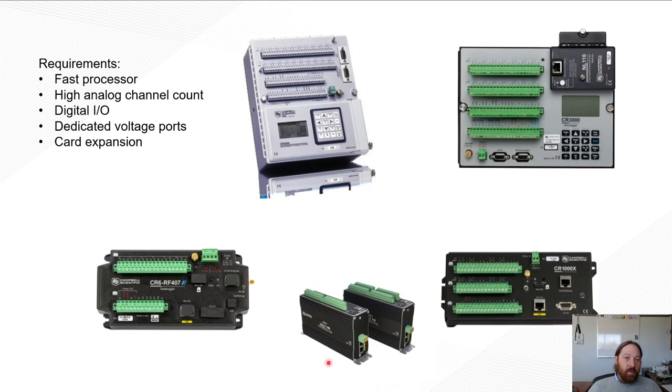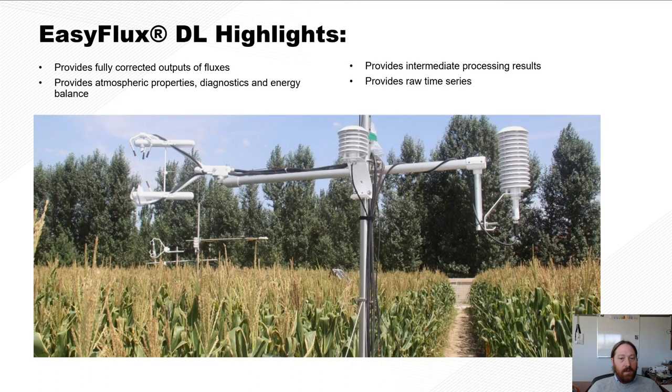Okay? So in addition to that data logger, what I keep mentioning is fully corrected fluxes. Well, those come in the form of our EasyFlux DL. EasyFlux DL provides fully corrected outputs of fluxes, atmospheric properties, diagnostics, and energy balance, and also intermediate processing results and raw time series. It does this on the CR3000, with a maximum of a 10 Hz measurement, and it can do it on the CR6 and the CR1000X up to 20 Hz. So for the first time, we're able to really offer those fully corrected fluxes right on the data logger, at the same time providing you raw time series if you want to go back and process your own fluxes.